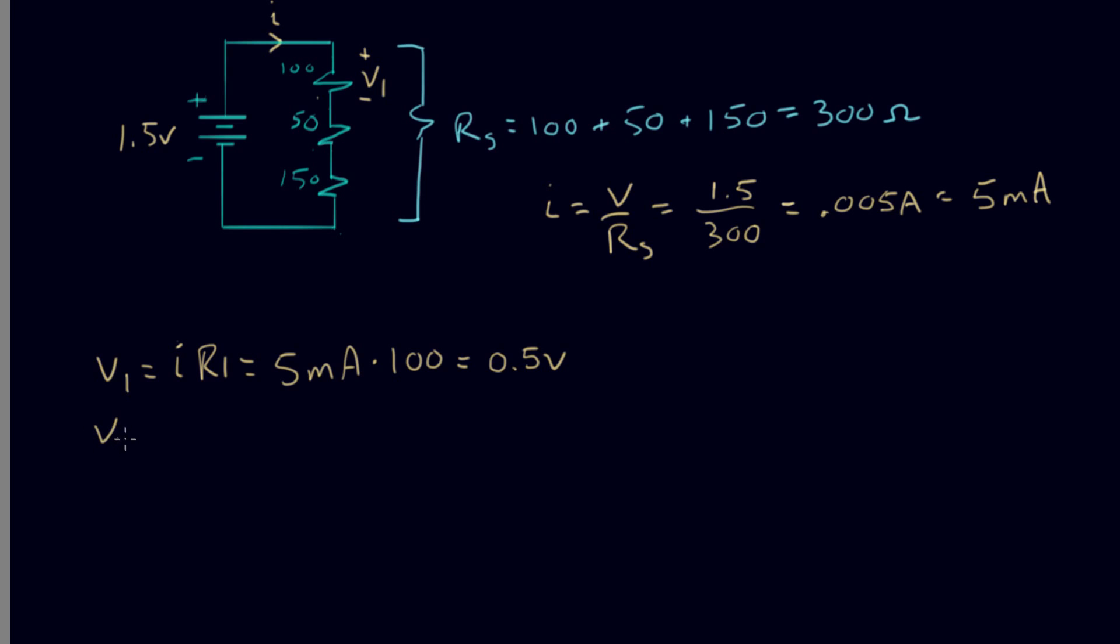Let's do it for the other one. V2 equals I, same I, this time times R2. 5 milliamps times 50 Ohms, and that equals 0.25 volts.